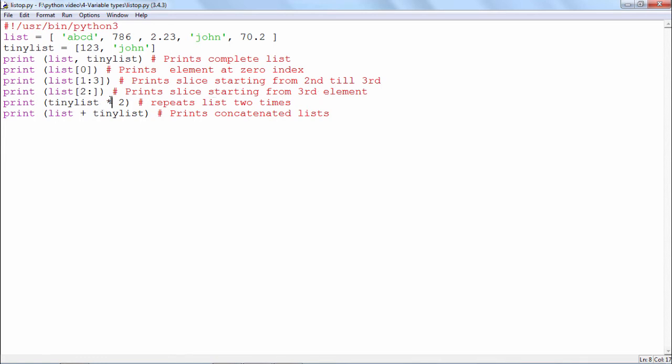The star operator is the repetition operator. If I say tiny list into 2, I should get the elements of the tiny list object printed twice. And lastly, the plus operator is used here as a concatenation. These two lists will be joined together to create a third list. Let us now see the result of this example.